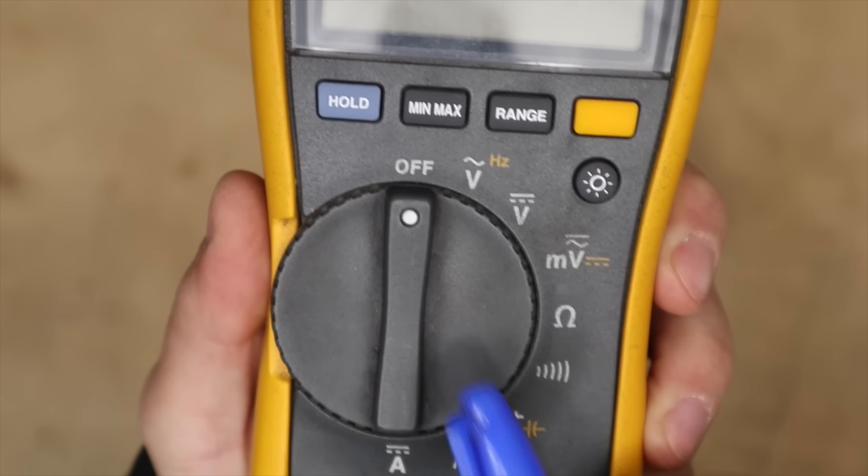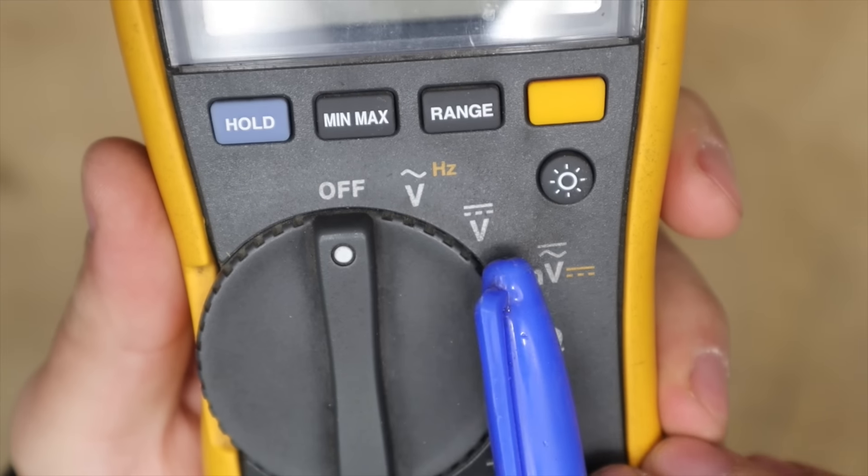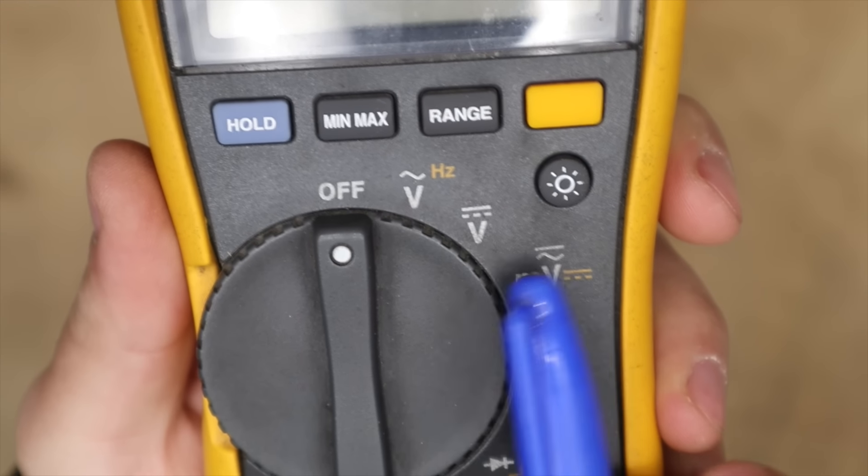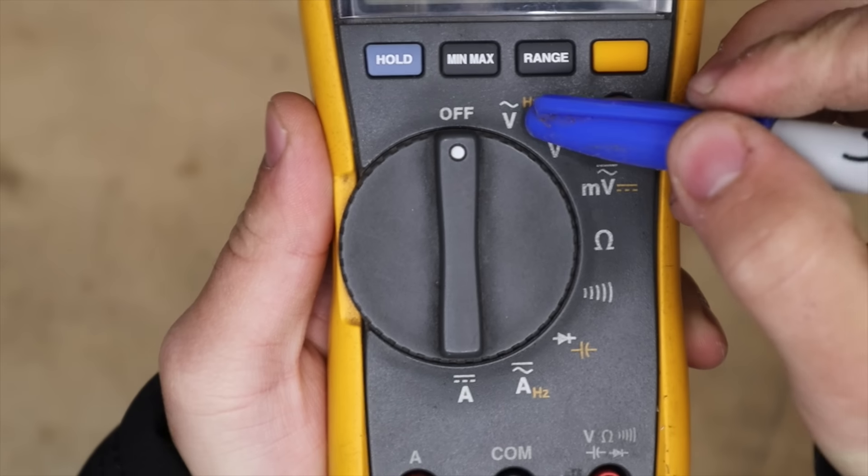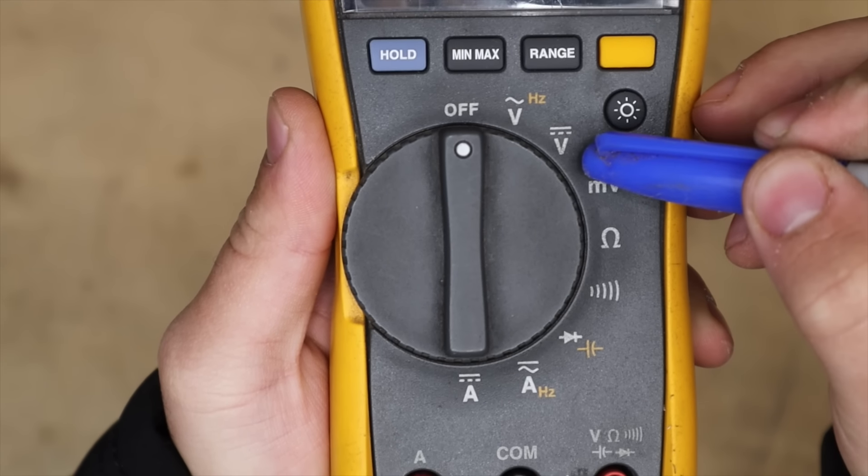This will allow you to measure voltage of power lines and devices. The power in your home is alternating current, also known as AC, and is represented by a wave sign. Then we have DC current, which is also known as direct current and is represented by two lines, one solid and the other dotted. You'll usually have two voltage selectors on your meter, one for alternating current and one for direct current.